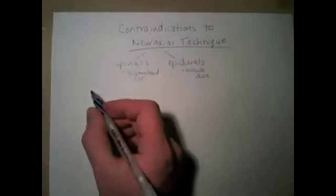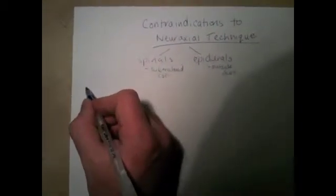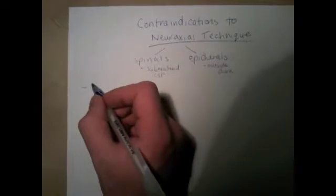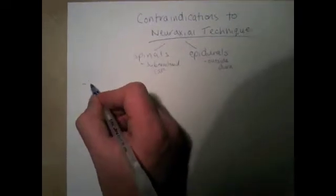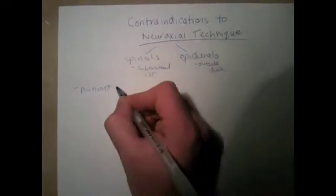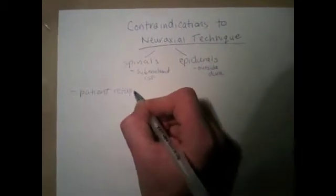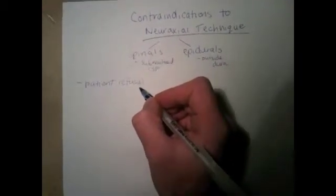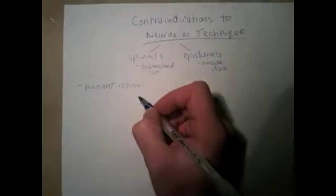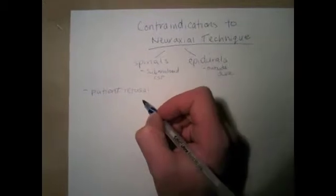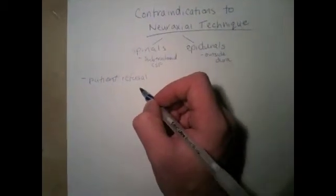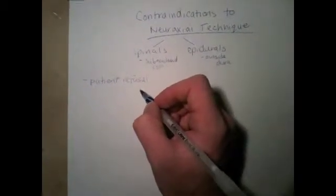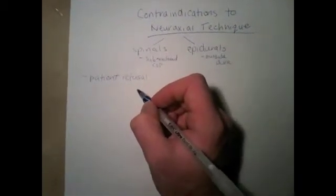Starting off our list, and you'd be surprised at how often you run into this, is patient refusal. There are a number of patients who actually don't like the idea of getting a needle in their back, and it scares them. So if they're really worried about it and you can't convince them, then that's a contraindication to giving that type of anesthesia.